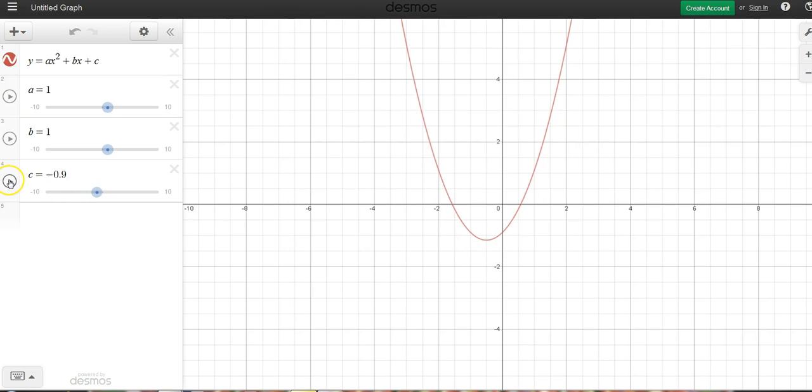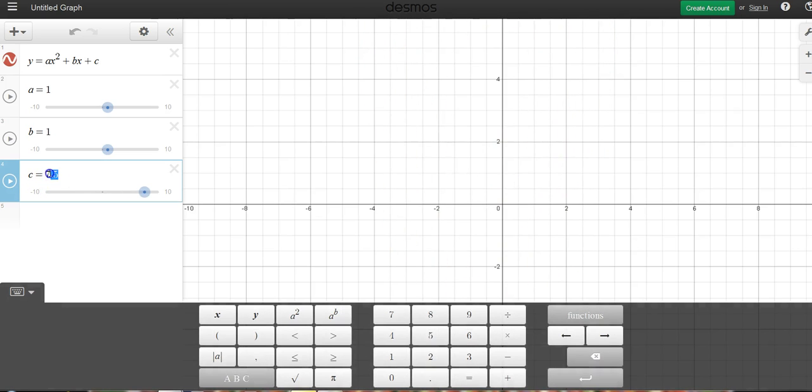And again, I can play that. And you can just see it moving up and down on its own. I can slow that down by hitting one of these two double arrows here. Or I can speed it up by doing that as well. Let's stop that. Let's move it back to 1, 1, 1.